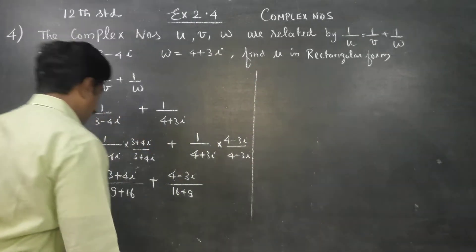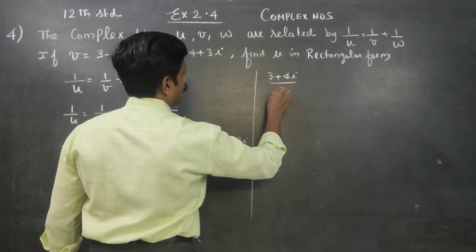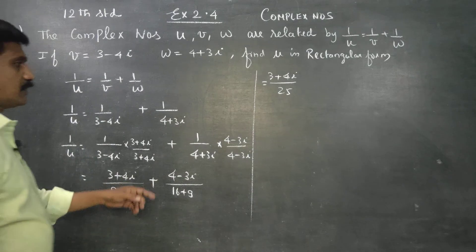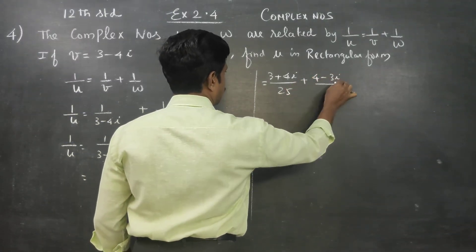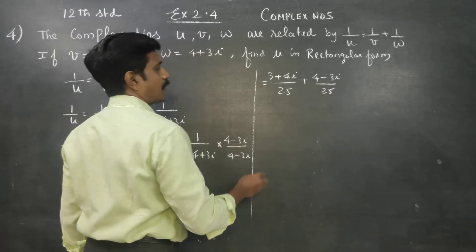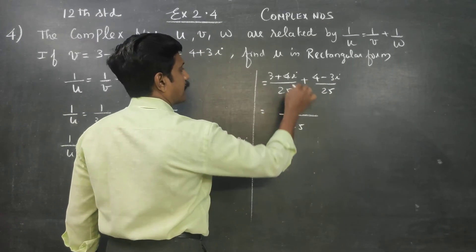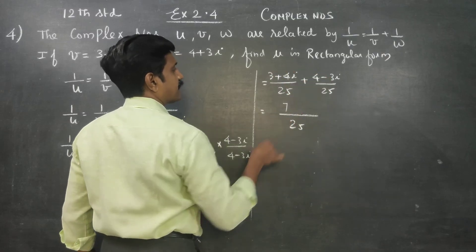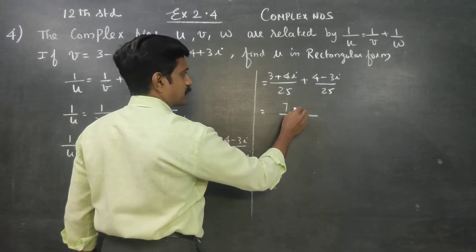Now, your answer will be 3 plus 4i by 25, 16 plus 9 is 25, plus 4 minus 3i by 25. LCM is 25, now I will add: 3 plus 4 is 7, 4i plus minus 3i is i. So 7 plus i by 25.